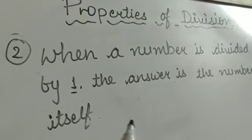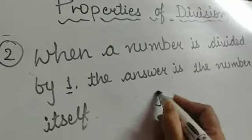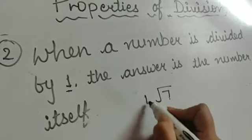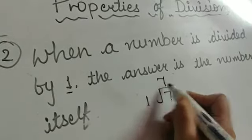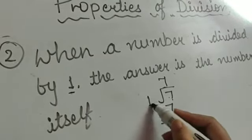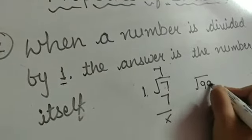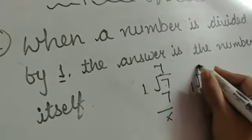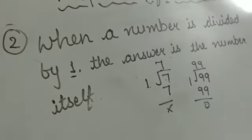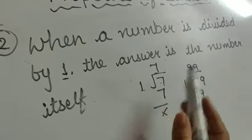Property 2: When a number is divided by 1, the answer is the number itself. If 7 divided by 1, then 1 into 7 is equals to 7, so the answer is 7. 7 divided by 1 is equals to 7. Any number: 99 divided by 1, 1 into 99 is equals to 99. So if any number is divided by 1, the answer is the number itself.